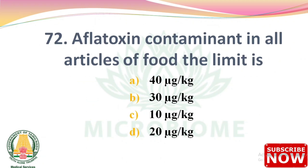Next question: for aflatoxin contaminant in all articles of food, the limit is — options: 40 µg per kg, 30 µg per kg, 10 µg per kg, 20 µg per kg. The right answer is Option B: 30 µg per kg.